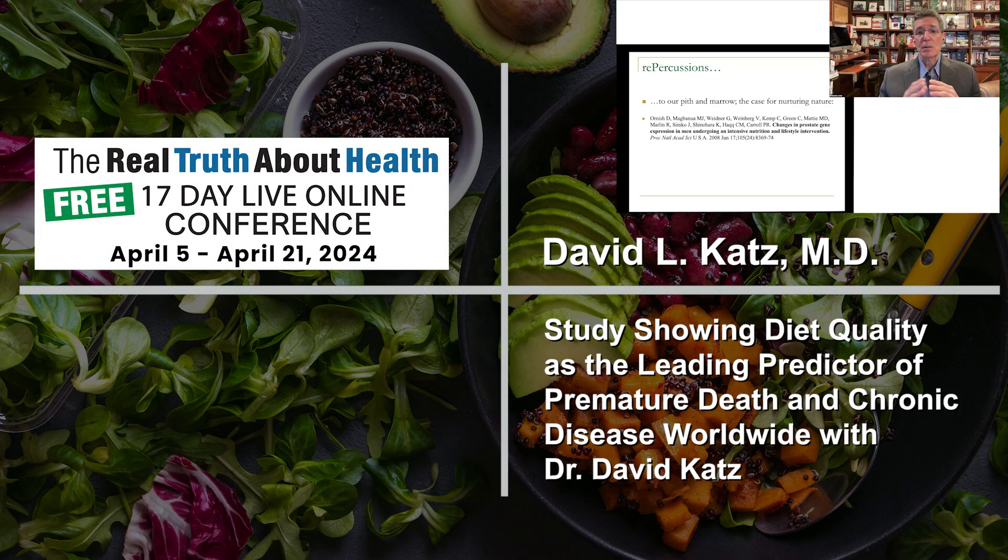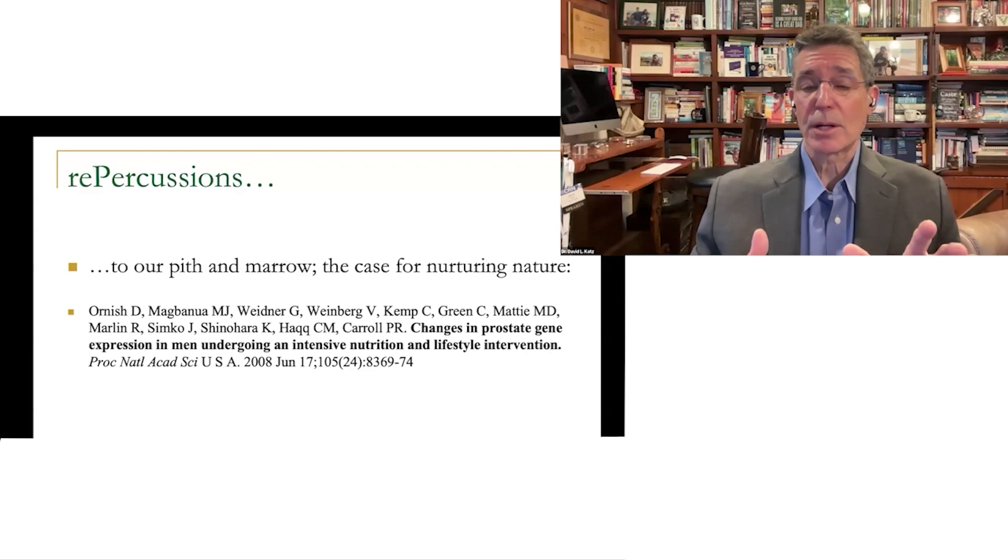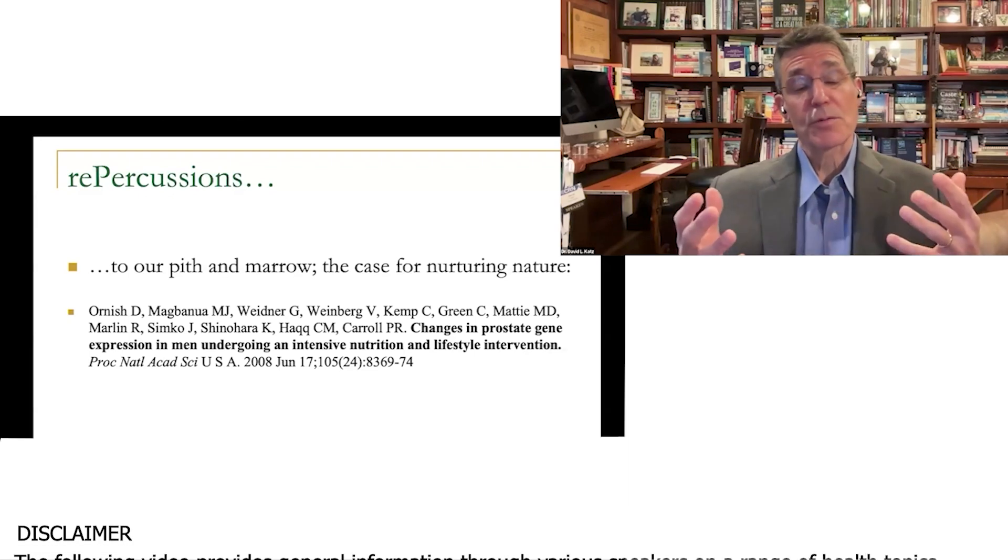Prostate cancer is unpredictable. Sometimes it progresses and sometimes it's quite indolent. So in the initial phase, when you identify it, you have to decide, will the cure be worse than the disease? Can we just sit back and leave it alone and nothing will happen?